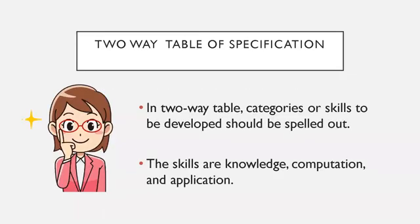There are two formats of table of specifications: the one-way and the two-way. In this video, we will be focusing on the two-way table of specification. In a two-way table, categories for skills to be developed should be spelled out. Examples of these skills are knowledge, computation, and application.